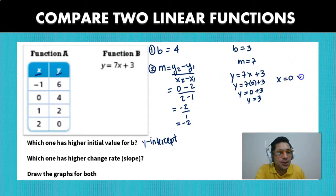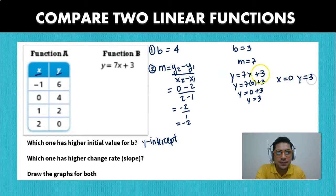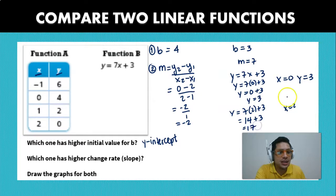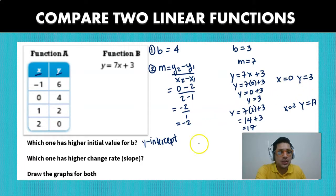So for x equal to 0, our value is going to be y equal to 3. And let's choose a value for y equals to 2, for x equal to 2, right? So it's 7 times 2 plus 3. So in this case, it's going to be 7 times 2, it's going to be 14 plus 3, which is going to be a value of 17. So that means that when x is equal to 2, y is going to be 17.